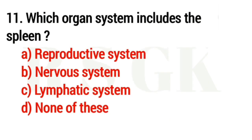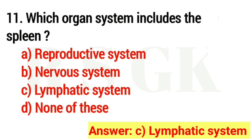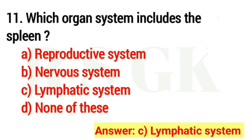Question number 11. Which organ system includes the spleen? Correct answer option C. Lymphatic system.